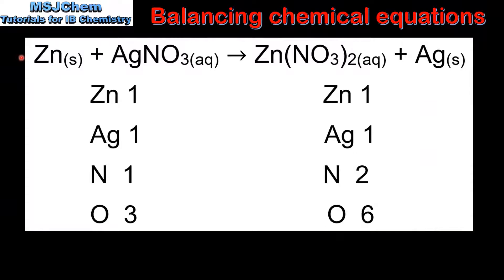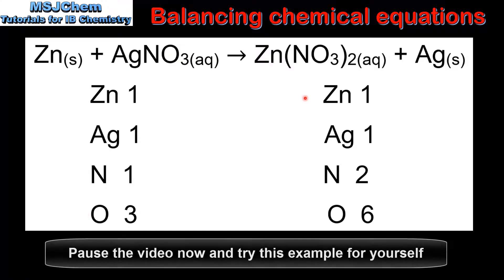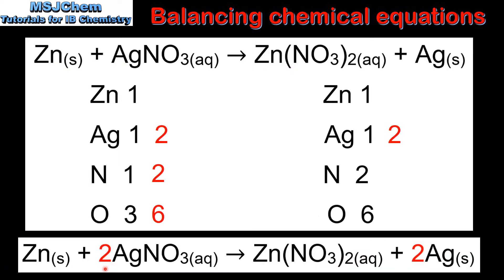In our final example we have the unbalanced equation for the reaction of zinc with silver nitrate to produce zinc nitrate and silver. In the reactants we have one zinc, one silver, one nitrogen and three oxygen atoms. In the products we have one zinc, one silver, two nitrogen and six oxygen atoms. To balance the equation we need to put a two in front of the silver nitrate and a two in front of the silver, which gives us the same number of atoms in the reactants and the products.